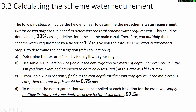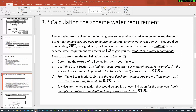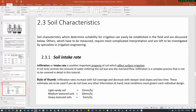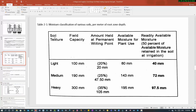Step 1: To determine the net irrigation, refer to section two and determine the texture of soil by feeling it with your fingers. Use Table 2.1 in section two to find the net irrigation per meter of depth. For example, if the soil examined is heavy textured, the value is 97.5 mm — the readily available moisture as discussed. Let's refer to this table: for a heavy soil texture, we have 97.5 mm.